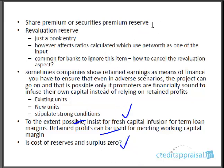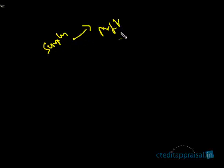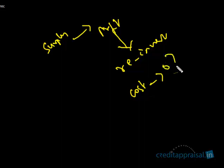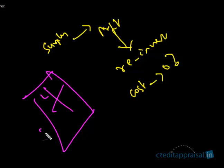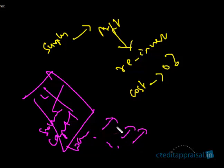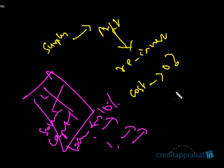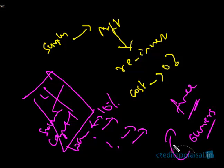Cost of capital is an advanced topic in financial management, but the key takeaway is that reserves and surplus is not a free source of funds — there is an opportunity cost. The term net worth refers to capital plus reserves and surplus. Since both capital and retained earnings belong to the owners, net worth is also called owners' equity, shareholders' equity, or net assets. It represents the total funds infused by the owners — both as initial paid-up capital and as retained earnings reinvested in the business.